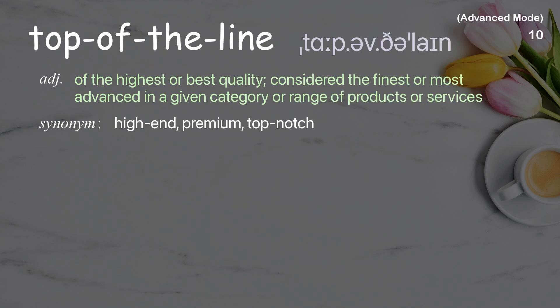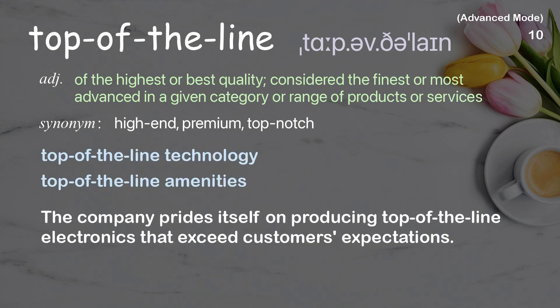Top of the line: of the highest or best quality; considered the finest or most advanced in a given category or range of products or services. Examples: top of the line technology, top of the line amenities. The company prides itself on producing top-of-the-line electronics that exceed customers' expectations.